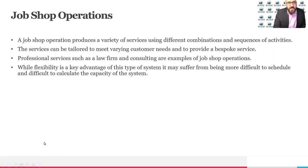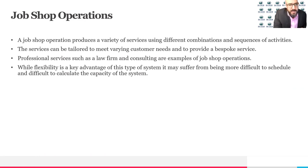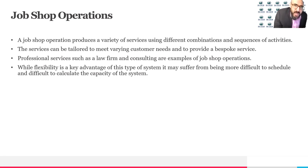Moving to the second type: job shop operations. A job shop operation produces a variety of services using different combinations and sequences of activities. The services can be tailored to meet varying customer needs and to provide bespoke service. An example is professional services such as a law firm or consulting, where you customize the service based on the case and the customer, tolerating your service to meet different customer needs.